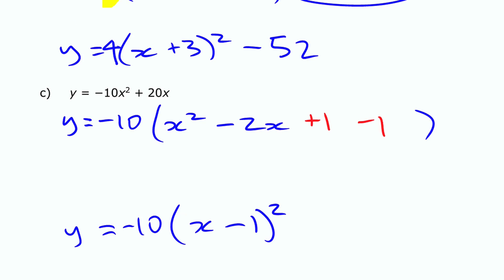But I also need minus 1 to keep it balanced. So this means that I can group these three terms, x² minus 2x plus 1. The minus 1 I'm going to put outside, but again remember that since there's that minus 10 in front, it needs to be a plus 10, minus 10 times that number.